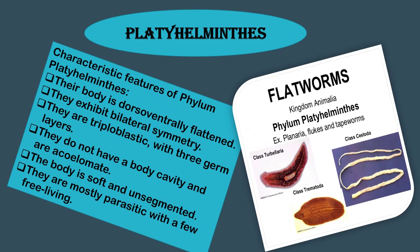The next phylum is Platyhelminthes. Their body is dorso-ventrally flattened and they exhibit bilateral symmetry. They are triploblastic with three germ layers. They do not have a body cavity and are acoelomate. The body is soft and unsegmented. They are mostly parasitic with a few free-living. Examples include Planaria, flukes and tapeworms.